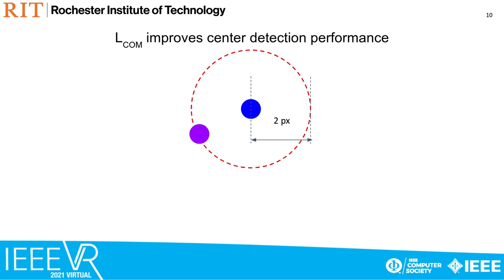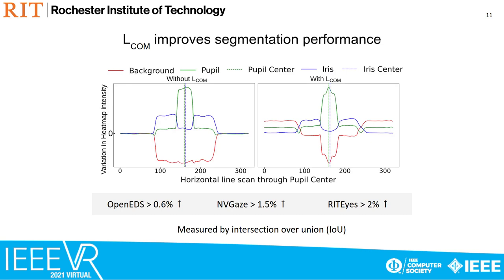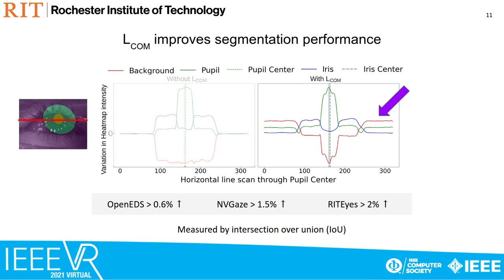To illustrate this improvement, we report the number of center estimates predicted within a two-pixel error margin. Note that this improvement is observed across all three datasets. The center of mass loss further conditions the network output to be more confident around ellipse centers. In the figure displayed, we see the output response across a horizontal line scan — note the increased separability induced by LSEC.